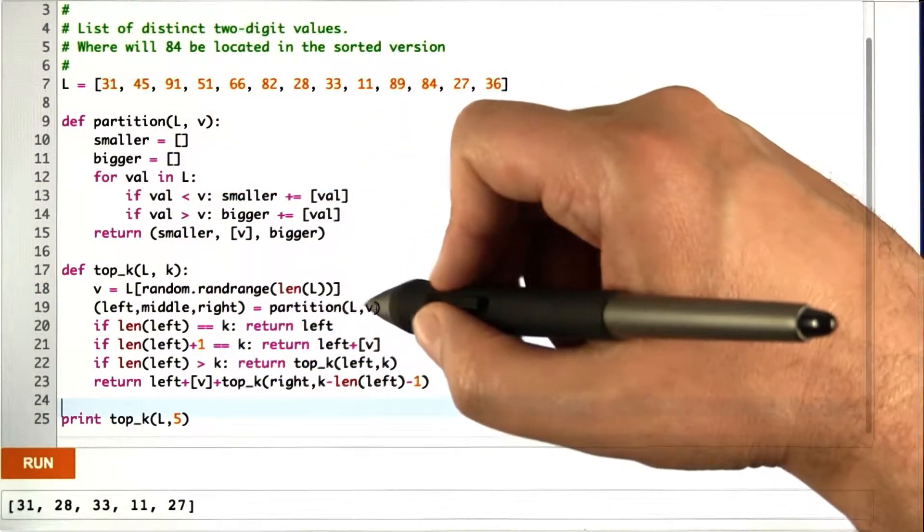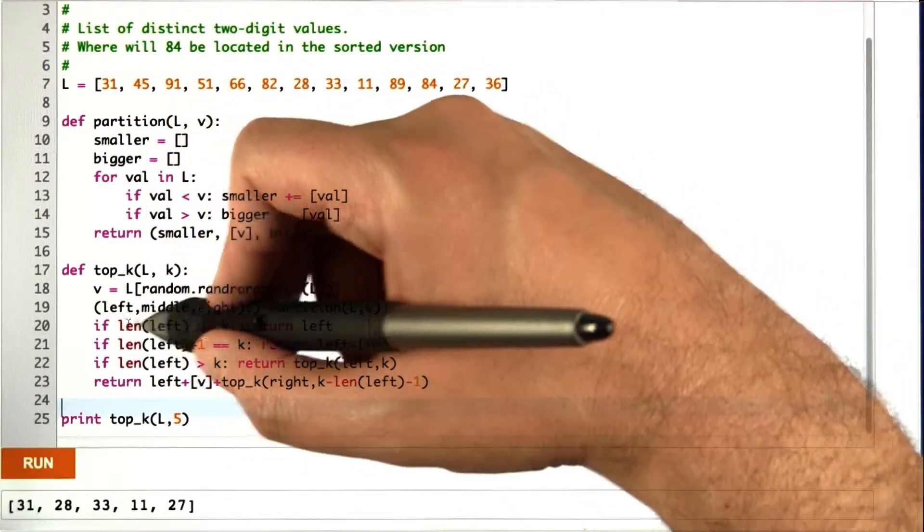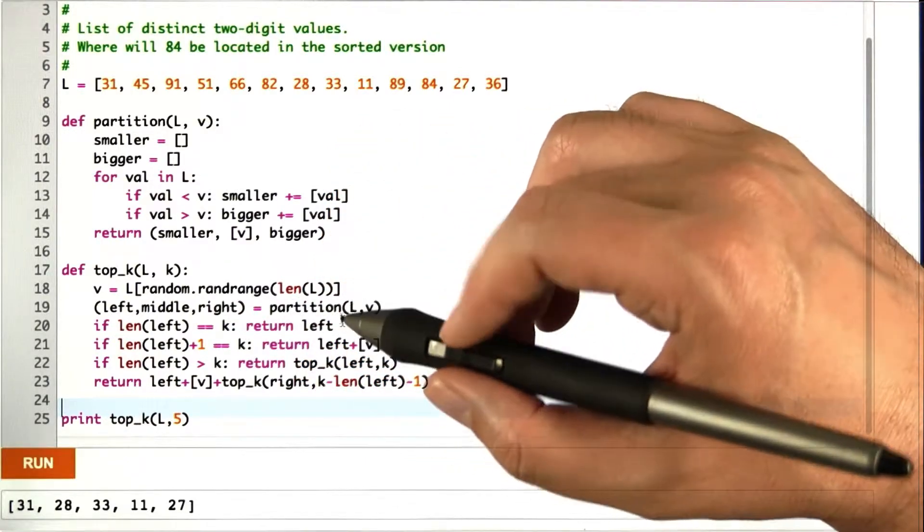Then we do a partition of l on v and separate it into the left, middle, and the right. If the size of the thing on the left is exactly k, we're done. The thing on the left is what we want.